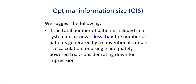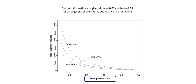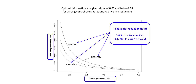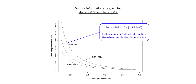For a single adequately powered trial, consider downgrading the quality of evidence for imprecision. This figure shows the relation of the control group event rate and the total sample size in conjunction with the anticipated effect, expressed as a relative risk reduction, shown for varying relative risk reductions representing 1 minus the relative risk. For any chosen line, the evidence meets the optimal information size criterion if sample sizes above the line are found when a systematic review has been completed. This optimal information size is given for an alpha of 0.05 and a beta of 0.2.